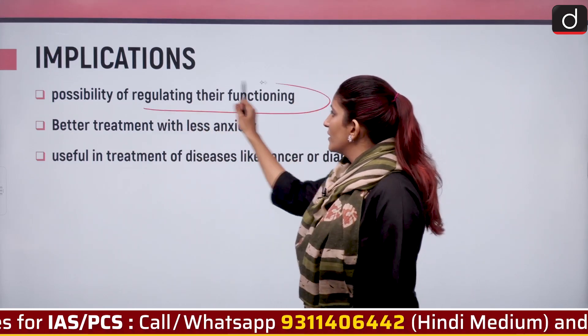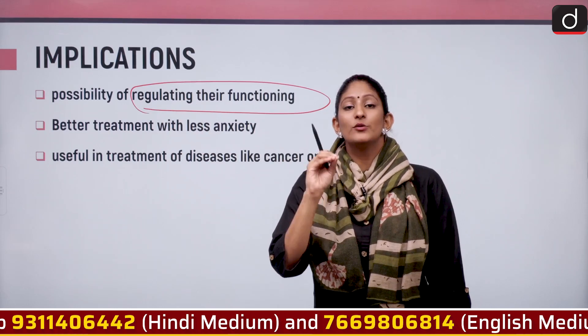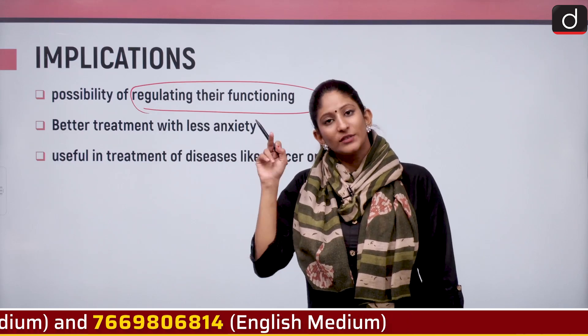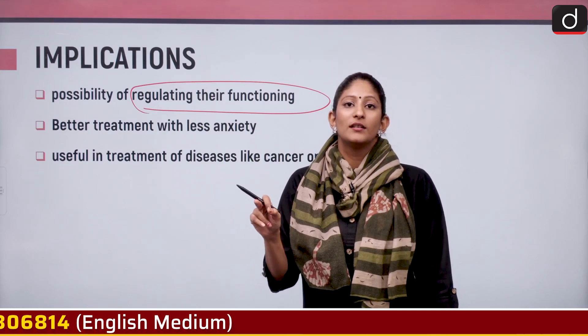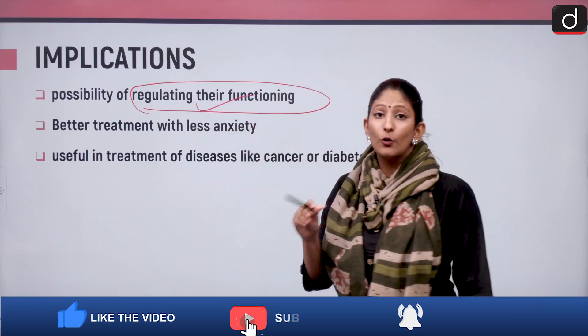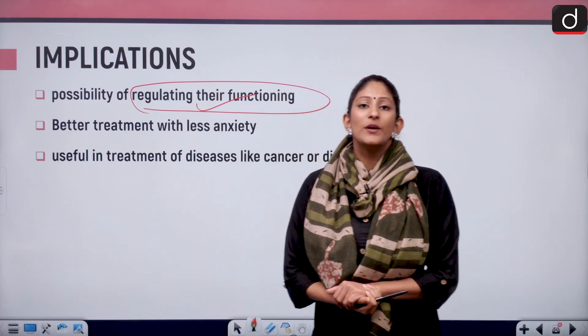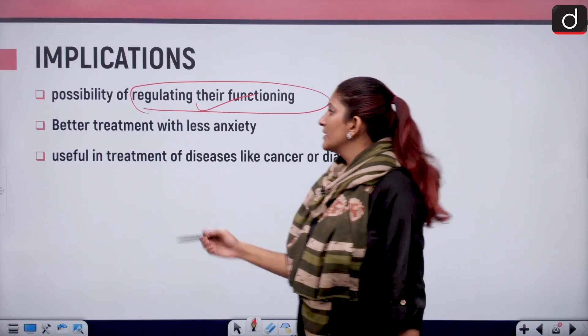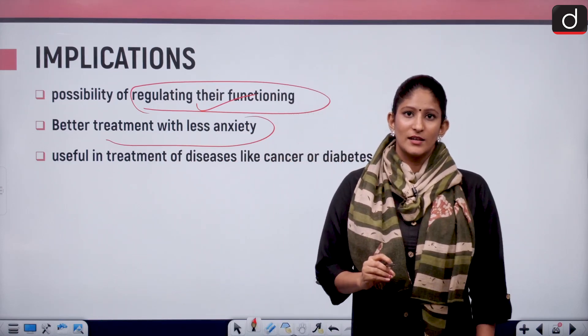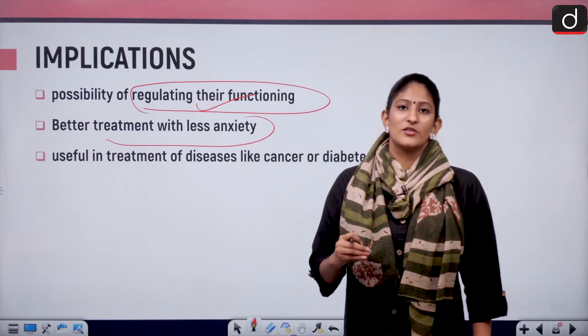First, possibility of regulating their function. If you know that cell X is responsible for feeling any sort of pain, then we will be able to regulate the pain through that targeted cell, through that targeted sensory system and not working it on another cell which is not responsible for it. That means chronic pain can be treated because we will be able to understand which cells are responsible, which class of sensory cells are responsible. Better treatment with less anxiety.